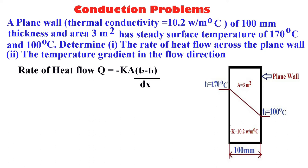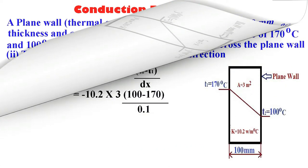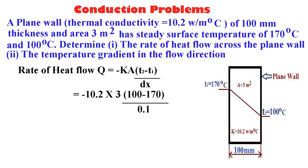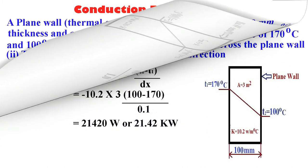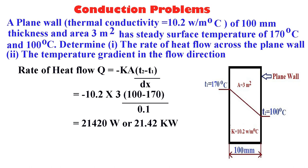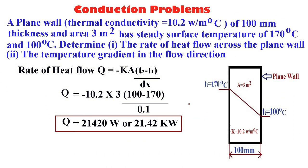The rate of heat flow across the plane wall: Q = −kA × (dT/dx), where dT = T2 − T1. Substituting values: k = 10.2, A = 3, T2 = 100, T1 = 170, and dx = 0.1 meters. The rate of heat flow Q equals 21,420 watts, or 21.42 kilowatts. This is the answer for the rate of heat flow across the plane wall.